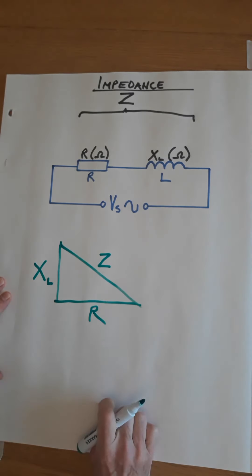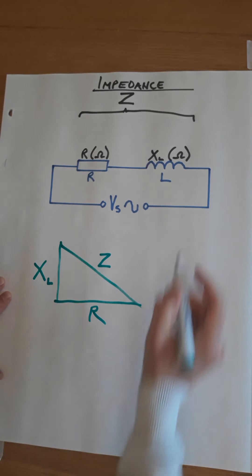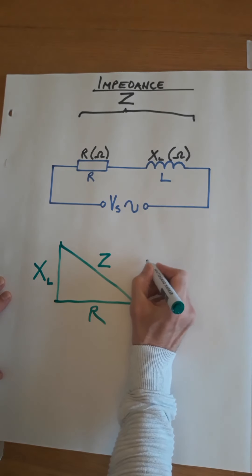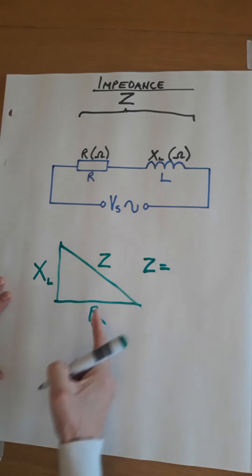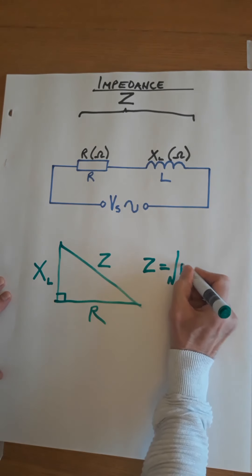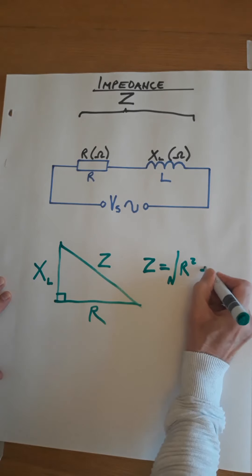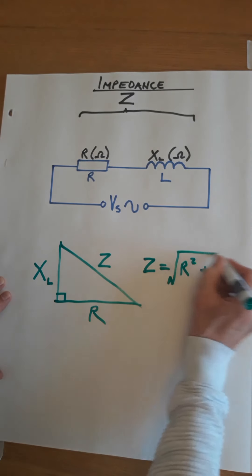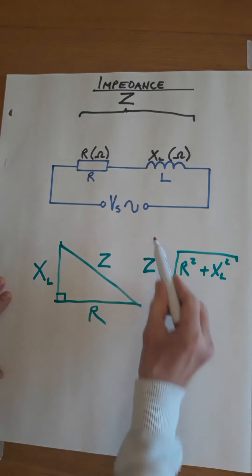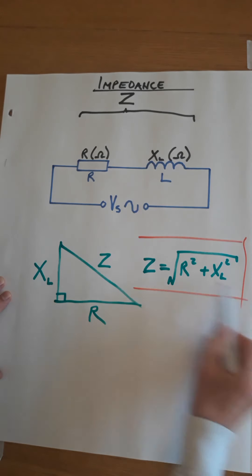Resistance, whatever the value of that is, let's draw it horizontally. We then have reactance which is 90 degrees shifted from it. In this case it's an inductor so it's XL, and the result of resistance and reactance together is called impedance, Z. All of these are measured in ohms and this is called the impedance triangle.